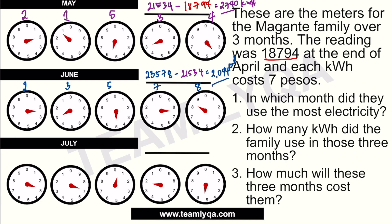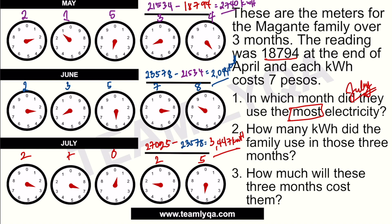Same thing for July. Reading the meter: 2, 7, 0, 2, 5 — giving us 27,025. Subtracting the June reading of 23,578 gives us 3,447 kilowatt hours. So for the question 'in which month did they use the most electricity?' — the answer is July, because 3,447 is higher than the 2,740 in May and the 2,044 in June.